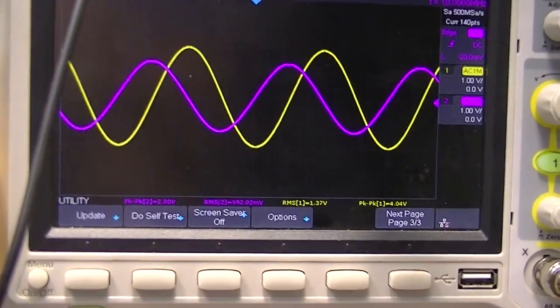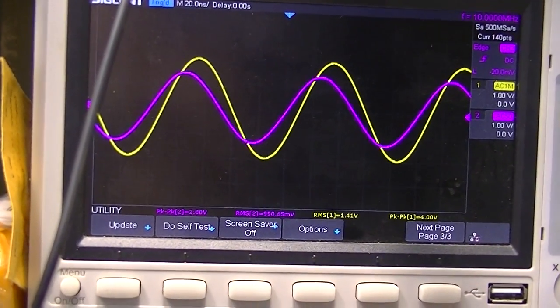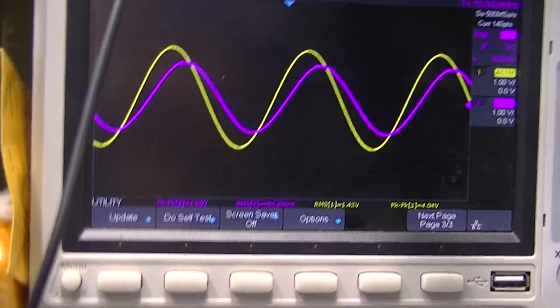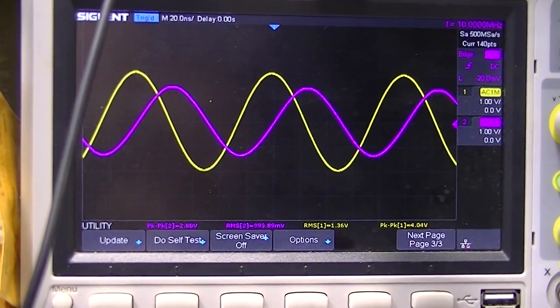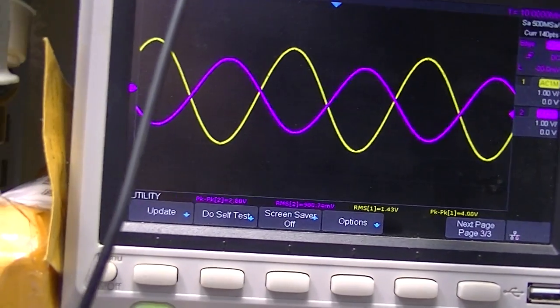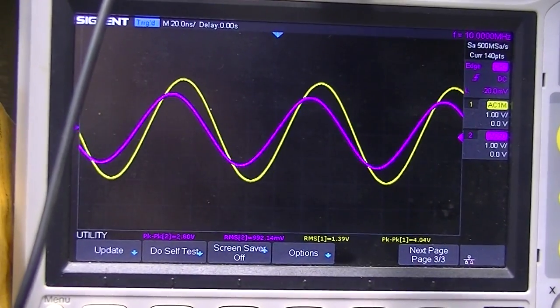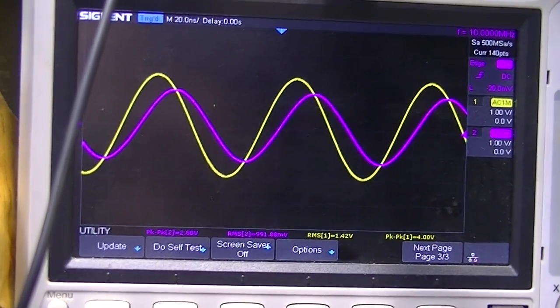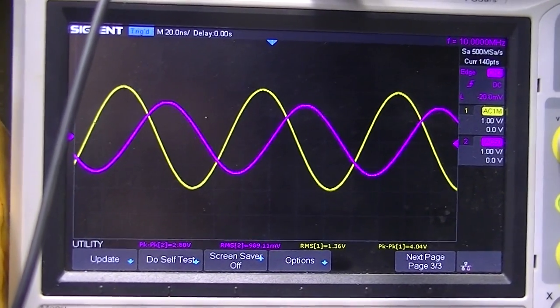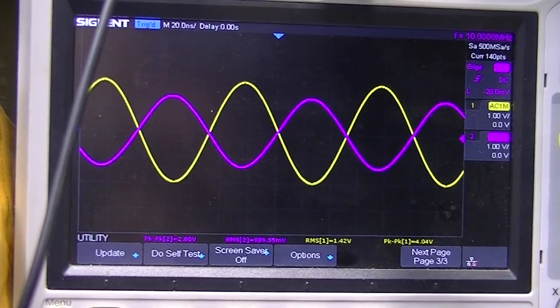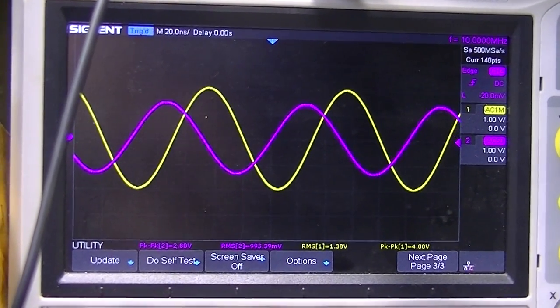We're back to the oscilloscope again. The scope's triggering off the purple input, and that's the QRP Labs device. The yellow input is a sine wave from the GPS disciplined oscillator from China. And that's not bad.